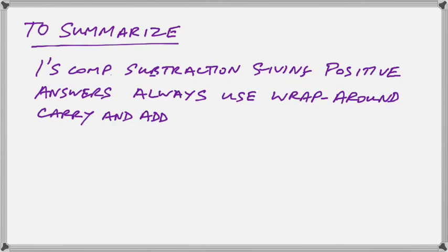So let's summarize what's happening here with our 1's complement and 2's complement subtraction. When we're doing a 1's complement subtraction, it's going to give us positive answers if the thing that we're subtracting is less than what we're subtracting it from. And if we get a positive answer, we always have to use wrap-around carry and add it in to get the proper result.